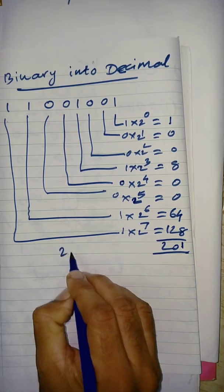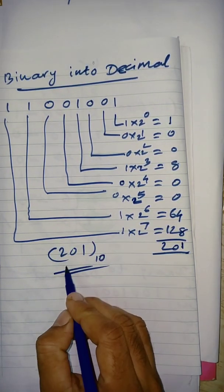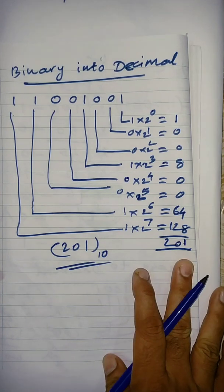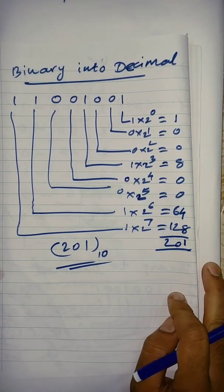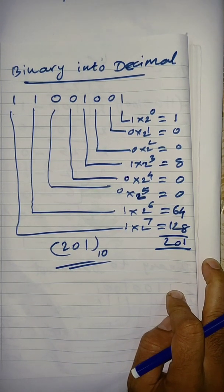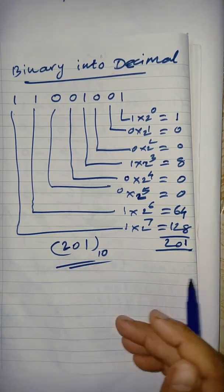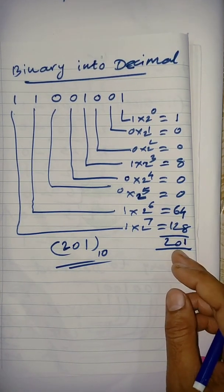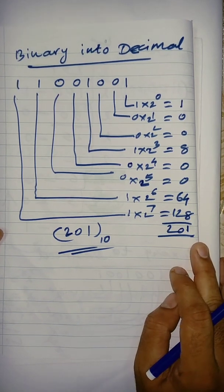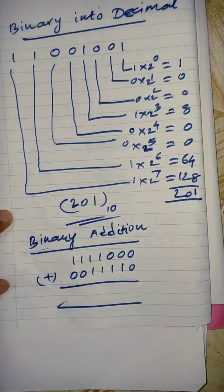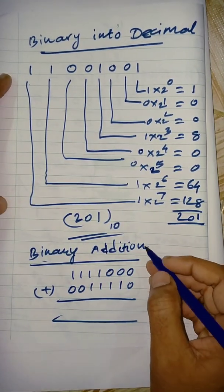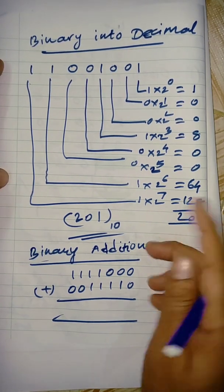So we are getting back the decimal number system. This is our method: binary into decimal conversion rule. Binary is used in the computer to store data, and then we retrieve it in the decimal number system. So, conversion between decimal to binary and binary to decimal is very important.